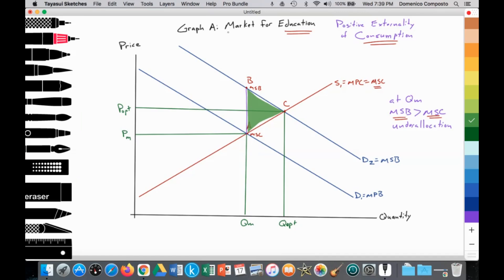As can be seen, we have graph A illustrating the market for education as an example of a positive externality of consumption. The consumption of education by households improves their skill set, makes them a higher skilled unit of labor, makes them more productive in the workforce, and it contributes to the overall micro and macro economy. We have an upward sloping supply of education equal to S1, which is equal to the marginal private costs of private education, also equal to the marginal social costs of education.